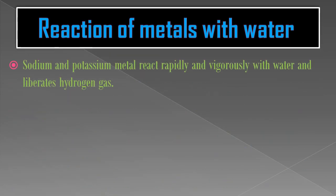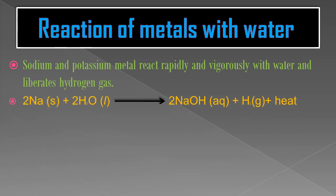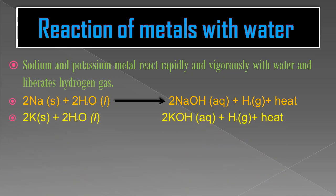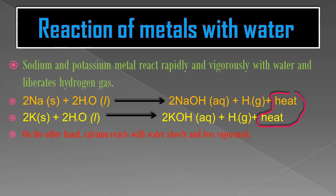Sodium and potassium react rapidly and vigorously with water, liberating hydrogen gas. When sodium reacts with water, sodium hydroxide (NaOH) is formed and hydrogen gas is liberated along with heat. Similarly, when potassium reacts with water, potassium hydroxide is formed along with hydrogen gas and heat. Calcium reacts with water slowly and less vigorously: Ca + 2H2O → Ca(OH)2 (aq) + H2.